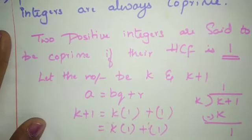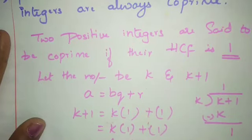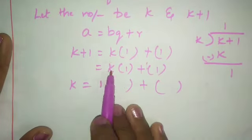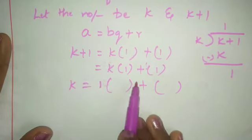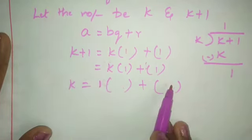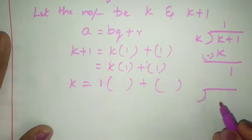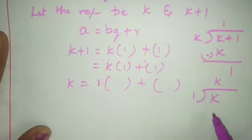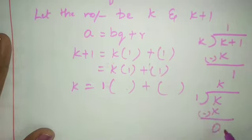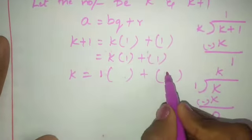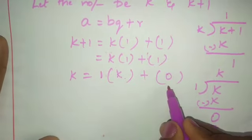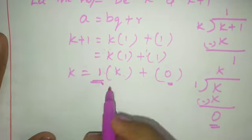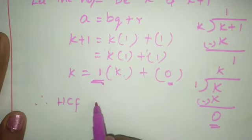Write: k+1 = k × 1 + 1. Now take k = 1 × q + r. Dividing k by 1: 1 × k is k, remainder is 0, quotient is k. When remainder is 0, the number next to the equal sign is the HCF.